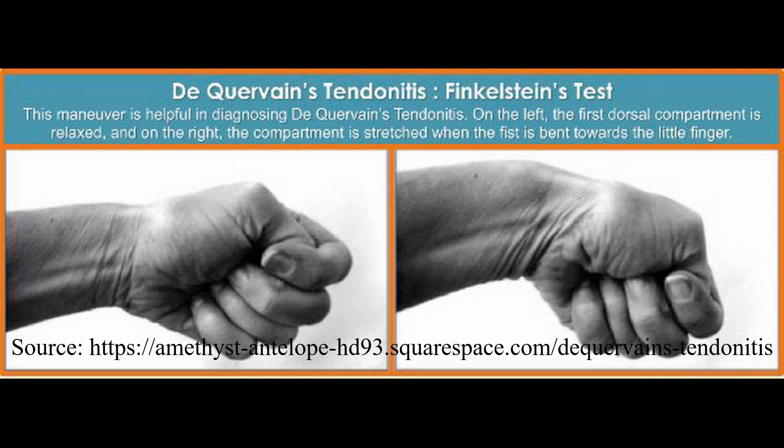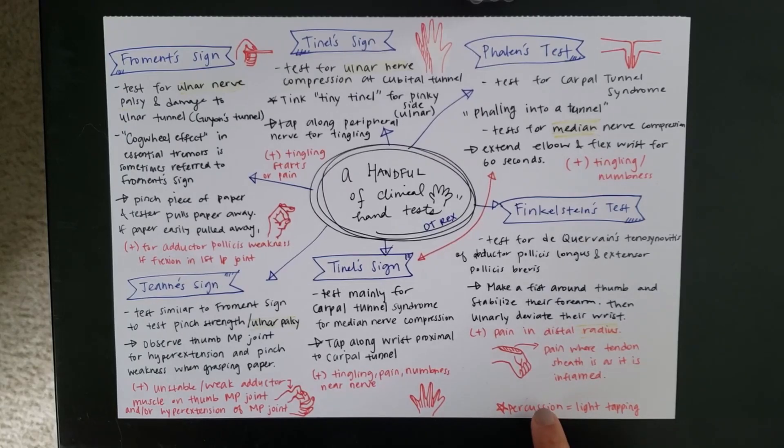And what we're doing there is we're really stretching out this tendon. So, if the tendon sheath here is inflamed, that's when you have the tenosynovitis. So, when you go like that, it's going to cause pain in the distal radius right here. And if you have pain, then you have a positive Finkelstein's test.